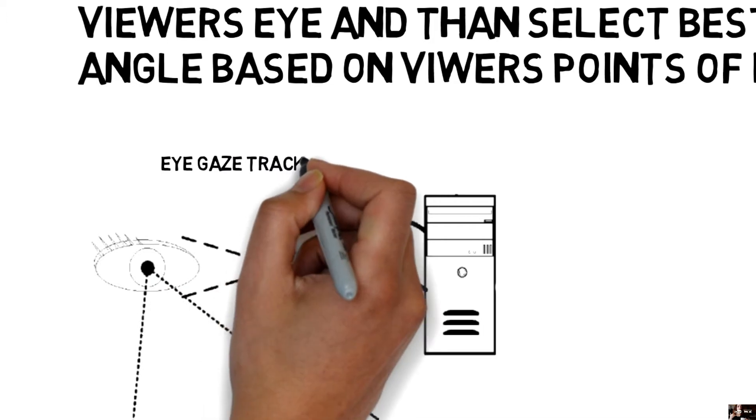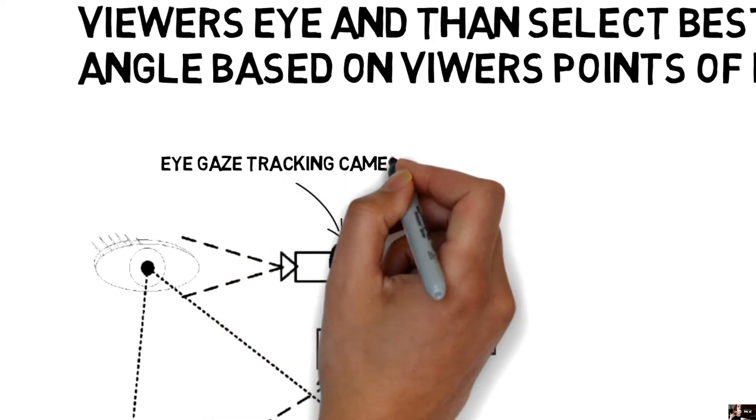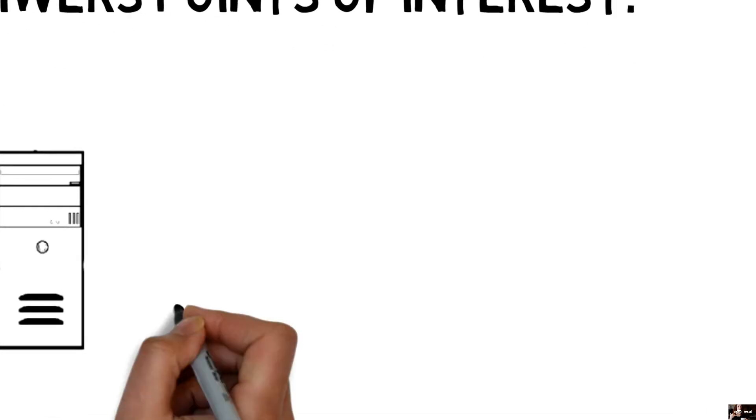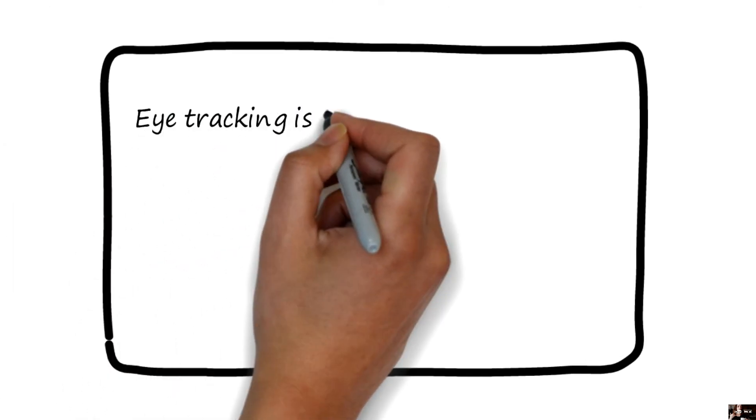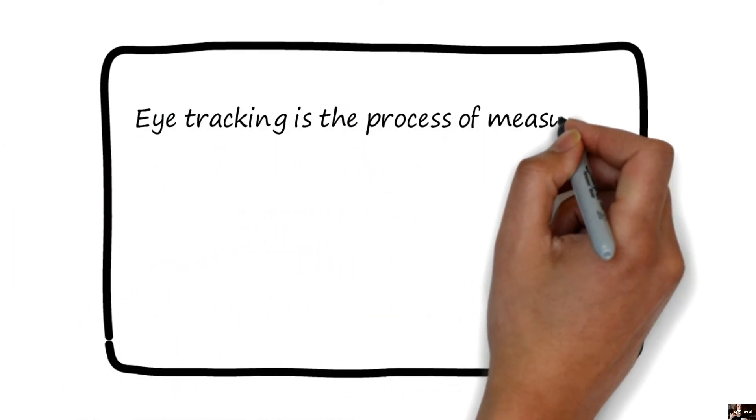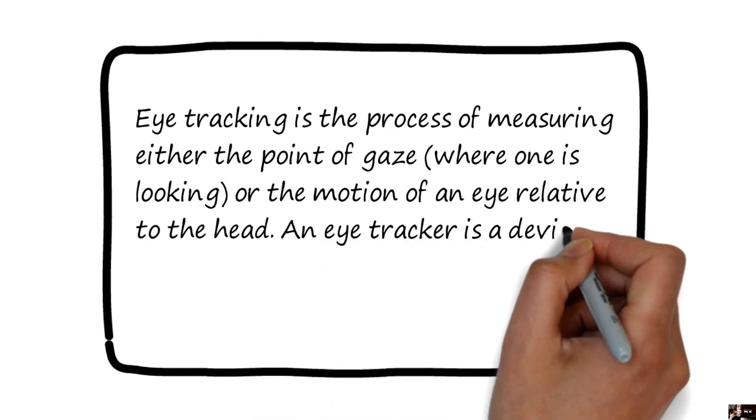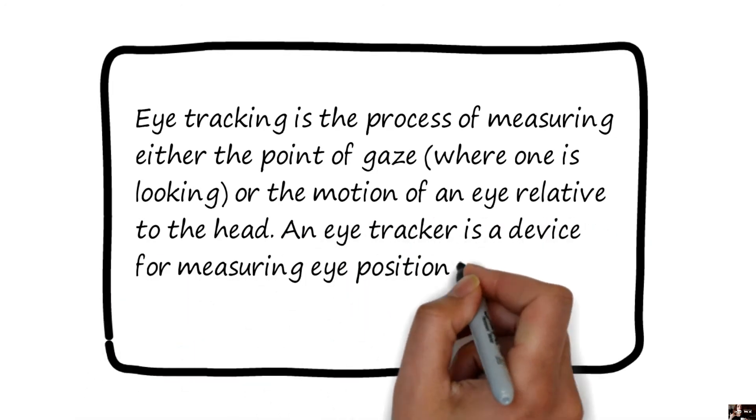Eye gaze tracking is the process of measuring either the point of gaze, where one is looking, or the motion of the eye relative to the head. An eye tracker is a device for measuring eye position and eye movement.